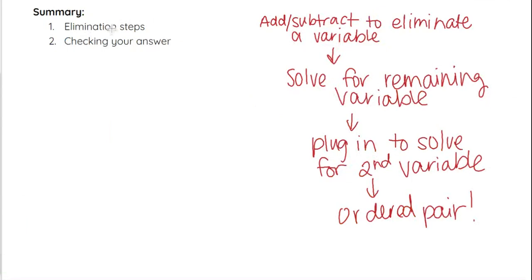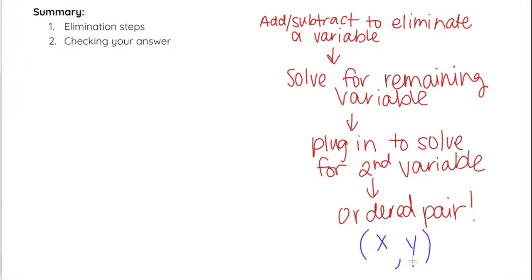In summary, here are the steps for elimination. First, if it's not already set up, we'll talk about how to adjust. But once it is set up, you add or subtract to eliminate one of the two variables. Then you solve for the variable that remains in that equation. Once you have that first variable, plug it back into either of the original equations to solve for the second variable. Always write your answer as an ordered pair, which is x comma y.